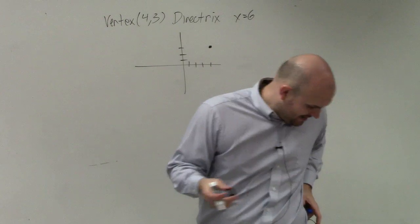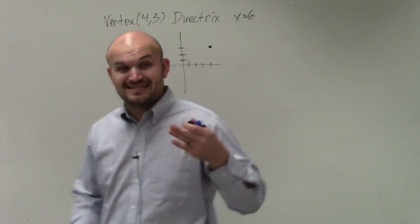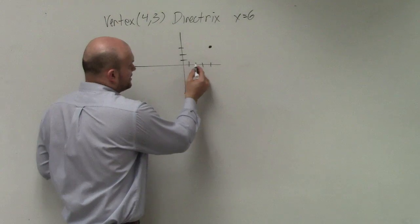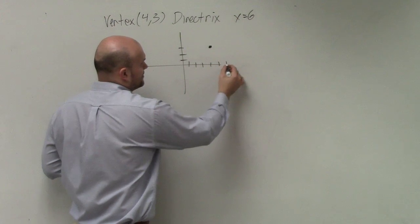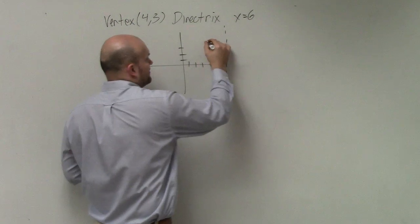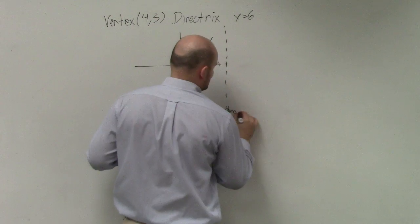The next one is a directrix, which is a line. So we've got to make sure we're drafting a line. So it's x equals 6. That means it's going to produce a vertical line. 1, 2, 3, 4, 5, 6. Vertical line, right? So we have vertex, directrix.